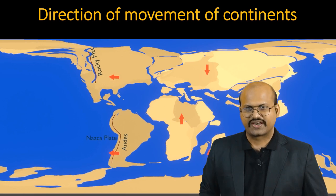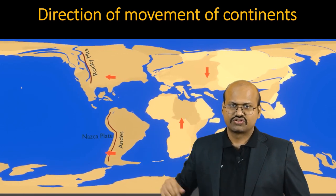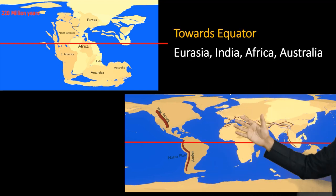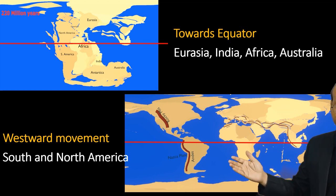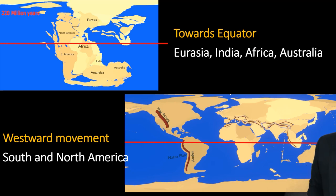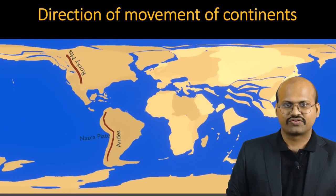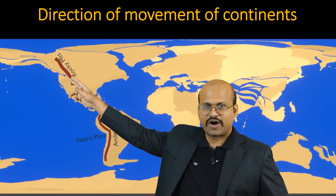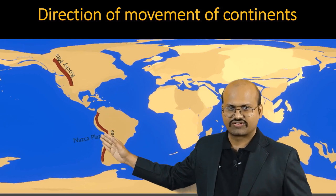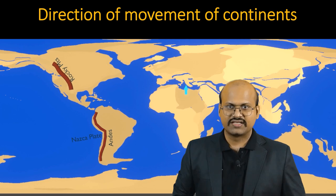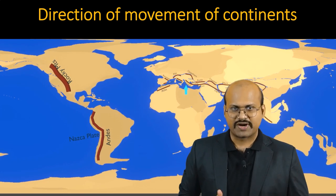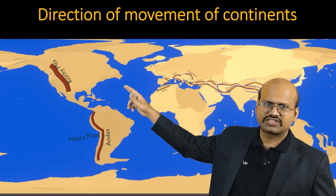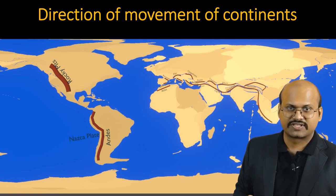However, the South and North American continents seem to have moved in a western direction, so Wegener said that these continents moved westward. Wegener further related continental drift to the mountain building process. Since the American continents moved westwards, we see long chains of mountains — the Rockies in North America and the Andes in South America — on the western margins. Since India and Africa moved northwards, we see the Himalayas and Atlas Mountains on the northern borders. While Eurasia moved southwards, we see long chains of mountains on its southern margin, including the Alps and others.